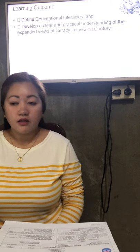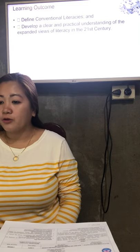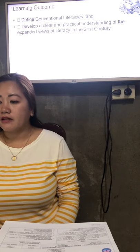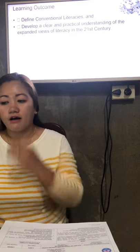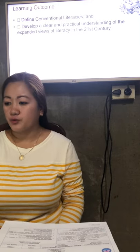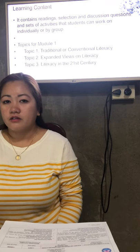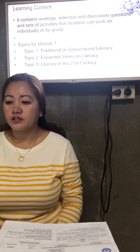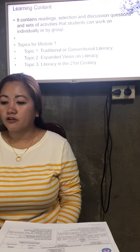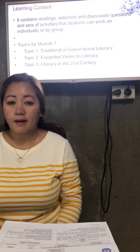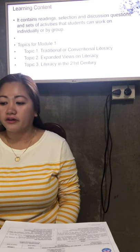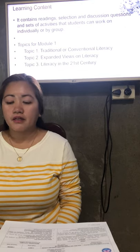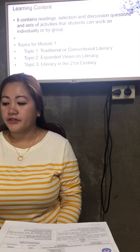This is just an overview. Our learning outcomes: we are expected to define what conventional literacies are, and we have to develop a clear and practical understanding of the expanded views of literacy in the 21st century. The learning content includes readings, selections, discussion questions, and sets of activities students can work on individually or by group. We have three topics: Topic 1 — traditional or conventional literacy; Topic 2 — expanded views on literacy; Topic 3 — literacy in the 21st century.